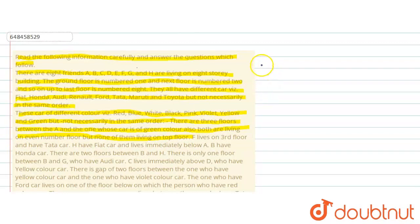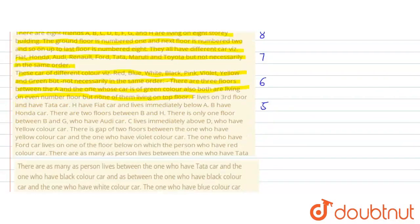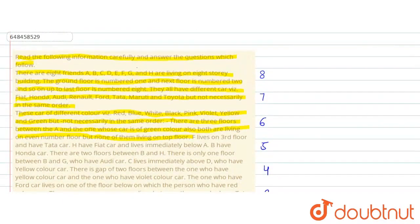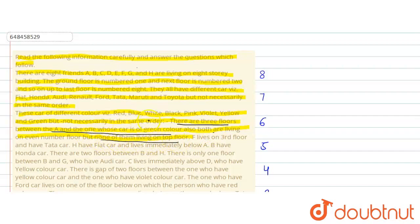So first of all, we have the floor numbering here. There are total 8 floors: 8, 7, 6, 5, 4, 3, 2, 1 — the topmost floor is 8. There are 3 floors between A and the one who has the green car, and both are on even floors but not on the top floor.